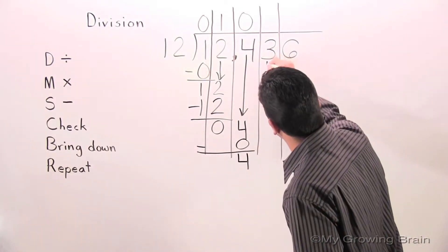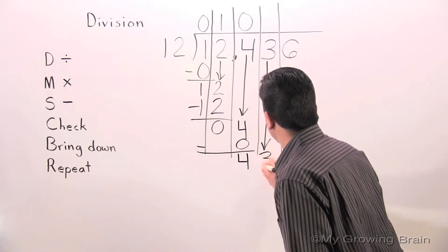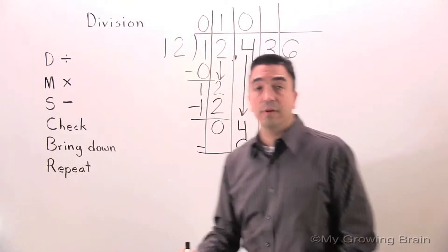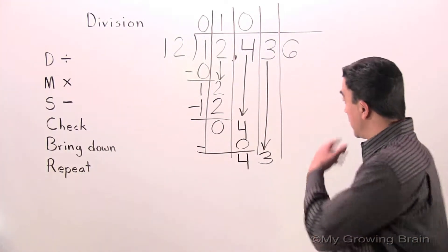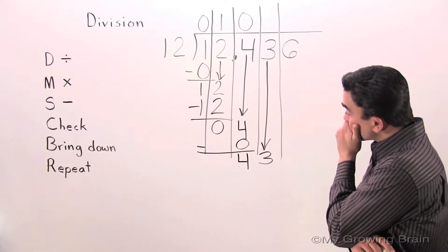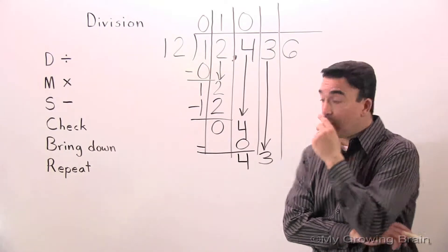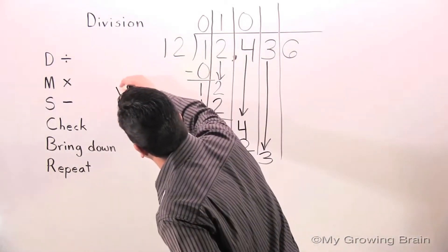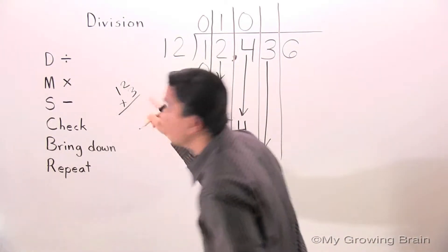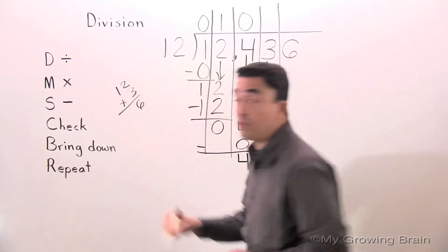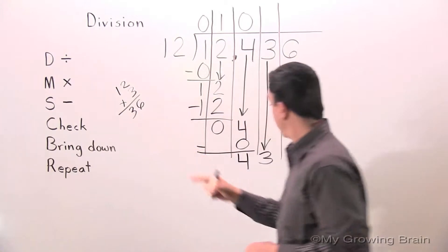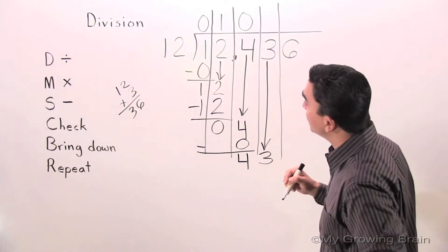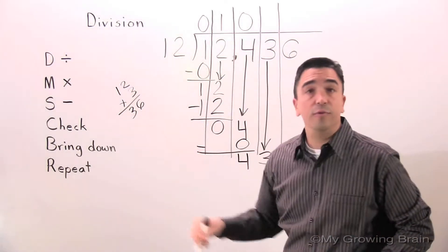Bring down. Next step: Repeat the whole process — go back to the top. Divide. 43 divided by 12. I know 12 times 2 is 24. I'm going to try 12 times 3 — remember, experiment. 3 times 2 is 6, 3 times 1 is 3, that gives 36. It's close to 43, so 12 goes into 43 three times.